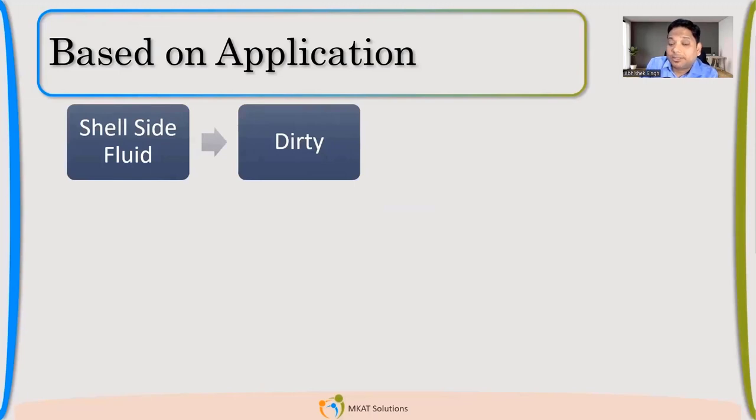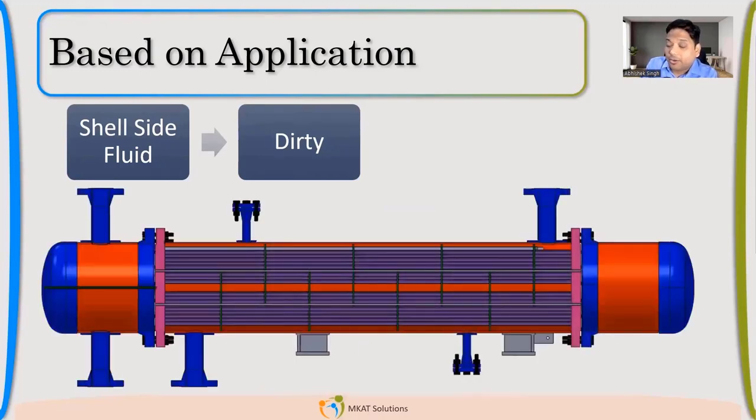So let us take one example that shell side is having a dirty fluid. In the shell side, we have dirty fluid. Now, can I take the exchanger which I have shown below for this application? Can I take that if my shell side is having dirty fluid? Absolutely no. We cannot take because there is dirty fluid means there will be accumulation of material on the tube side or the surface, so how will you clean it. There is no provision for cleaning. Your tube sheet is integral with the shell.